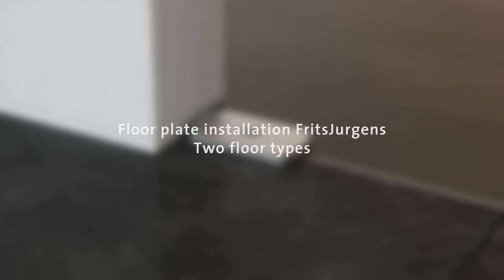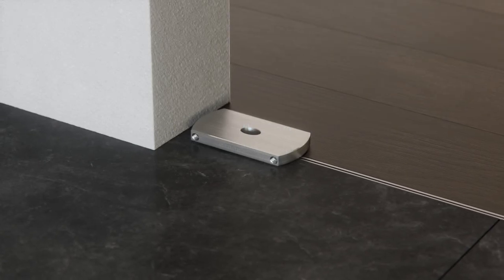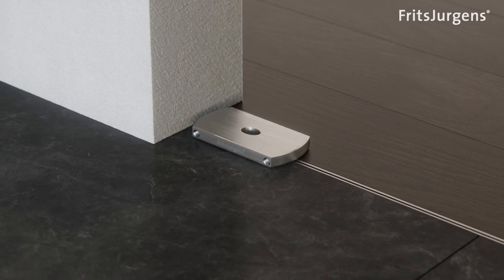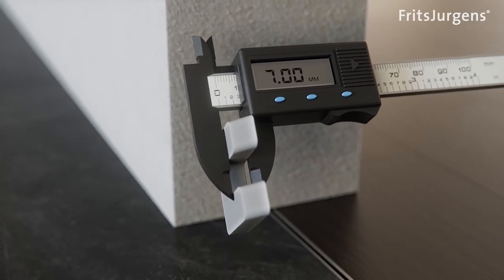This video explains the installation of a Fritz Juergens floor plate on two floor types. In this case the gap is 7mm. Use the gap calculator via the link to calculate yours.